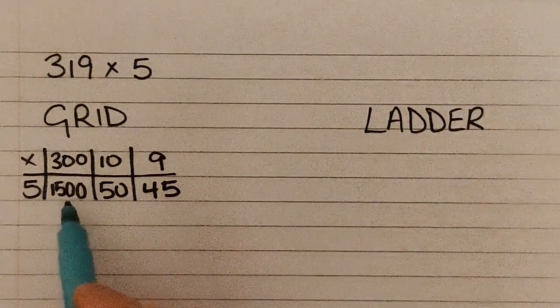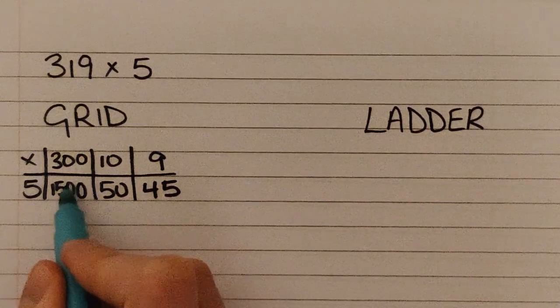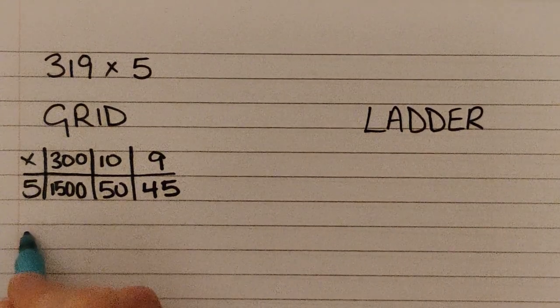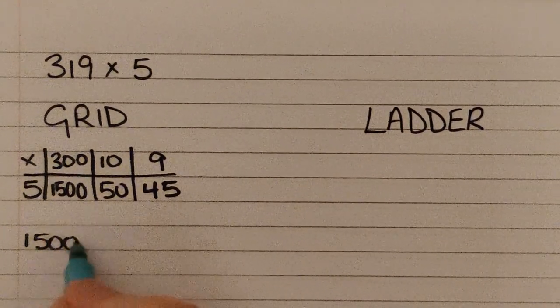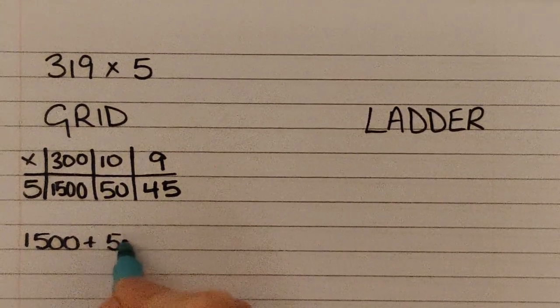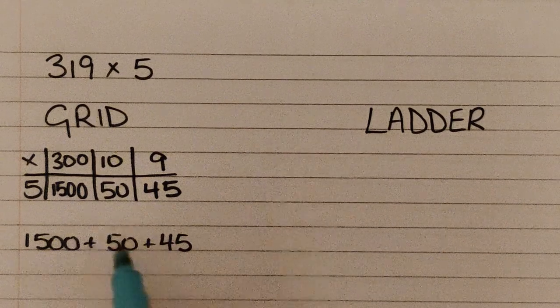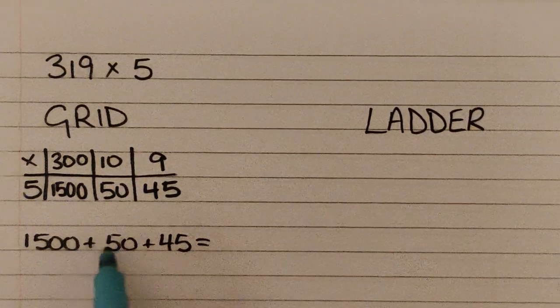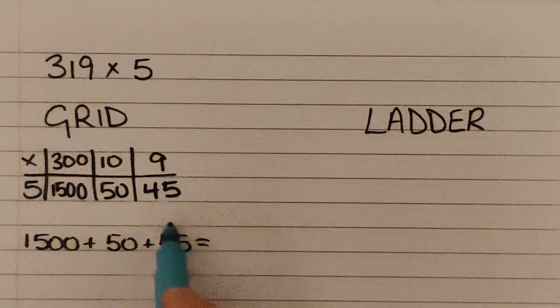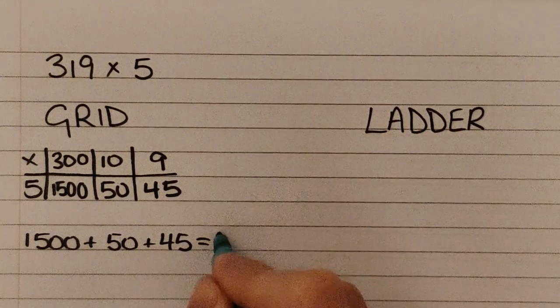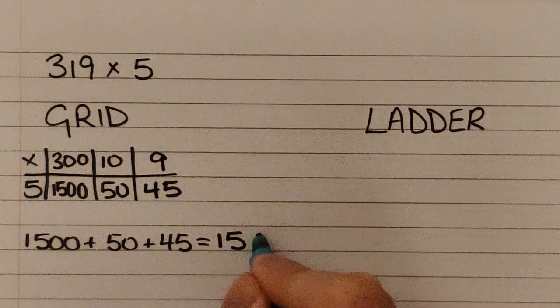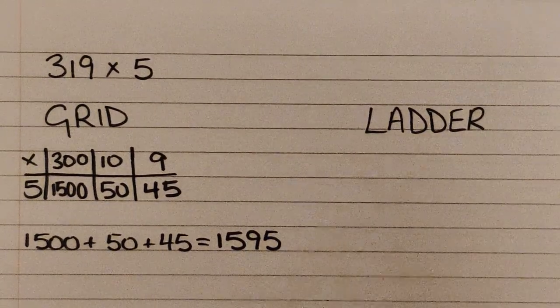What we have to do then is add up all of these different parts: our hundreds, our tens, and our ones. So we've got 1500 add the 50 and add the 45. If we add all of those together, we know 50 add 45 is 95, add the 1500 will be 1595.